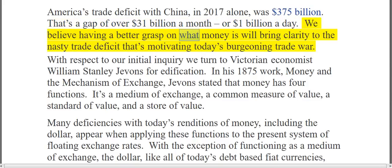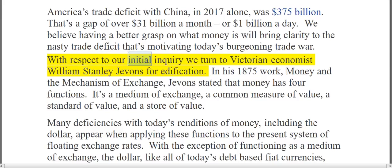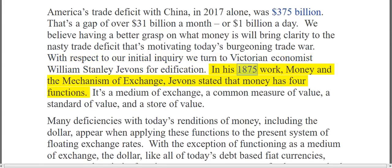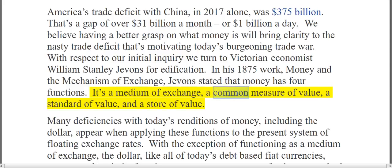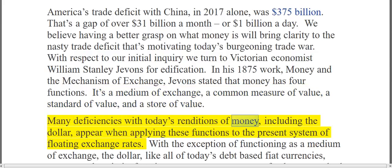We believe having a better grasp on what money is will bring clarity to the nasty trade deficit motivating today's burgeoning trade war. With respect to our initial inquiry, we turn to Victorian economist William Stanley Jevons for edification. In his 1875 work, Money and the Mechanism of Exchange, Jevons stated that money has four functions: it's a medium of exchange, a common measure of value, a standard of value, and a store of value. Many deficiencies with today's renditions of money, including the dollar, appear when applying these functions to the present system of floating exchange rates.